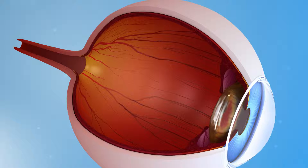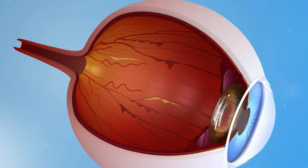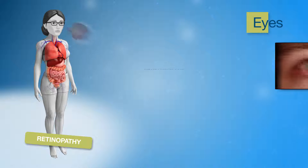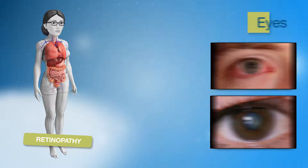The damage to the blood vessels causes three basic problems: leakage of blood, proteins and fat from the capillaries; poor blood circulation to the retina; and growth of abnormal blood vessels, which are prone to rupturing and scarring. People with diabetes are also at increased risk of developing both glaucoma and cataracts, which may occur at a much younger age and are likely to progress faster than the general population.